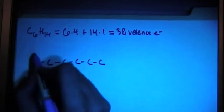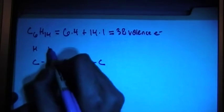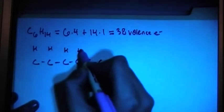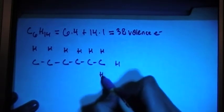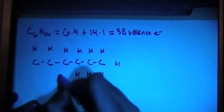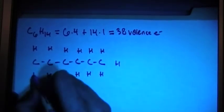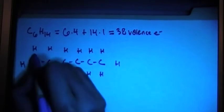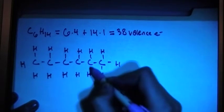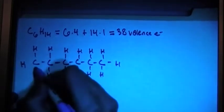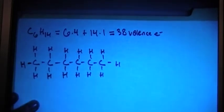Alright, and now we have to add in the 14 hydrogens. 1, 2, 3, 4, 5, 6, 7... 14. And then connect them all with single bonds, because hydrogens can only bond, or have one bond, because they can only hold two electrons. So, there we go.